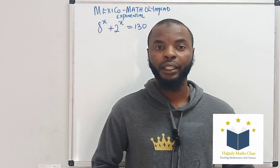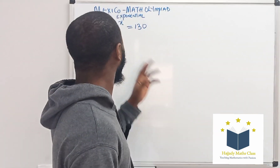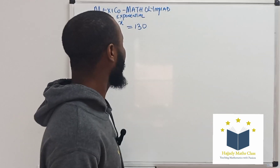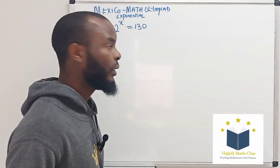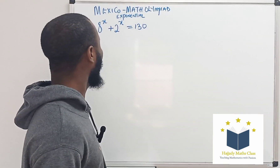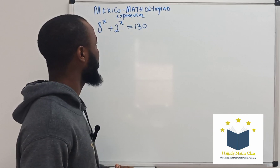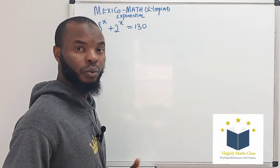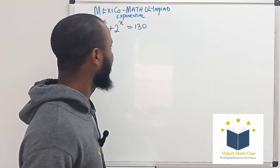Hello viewers, today I will be solving this Mexico-Bats-Olympia exponential problem. Now here we have 8 to the power of x plus 2 to the power of x equals to 130. Follow me.